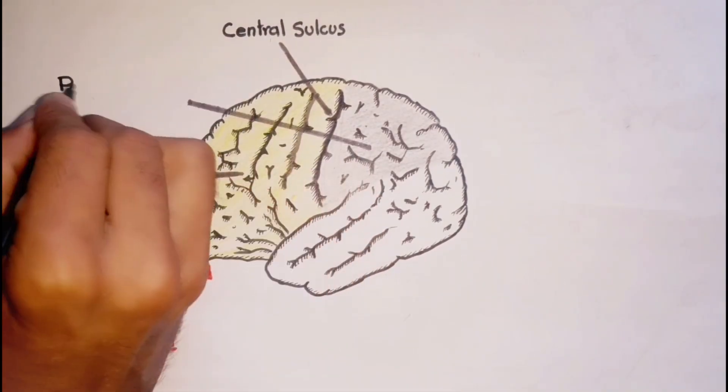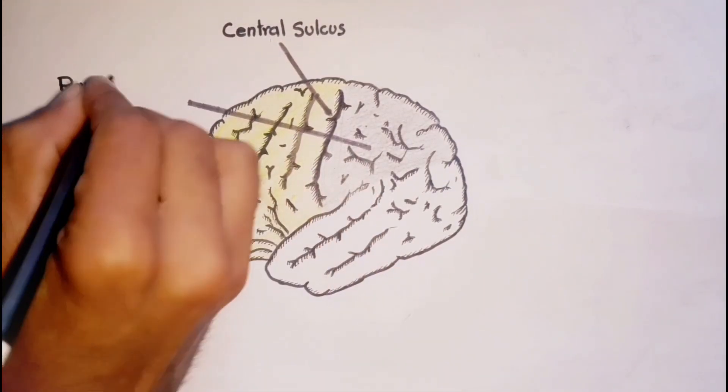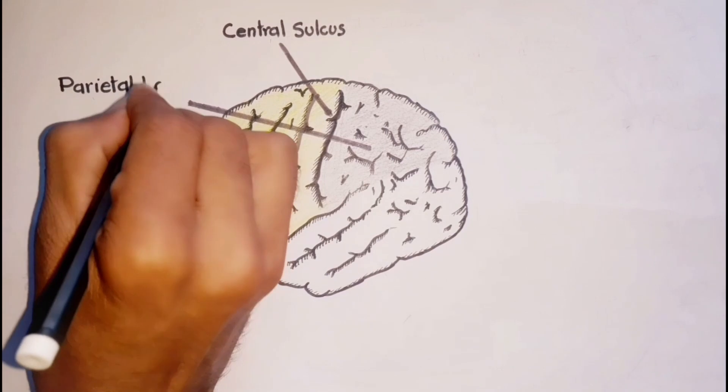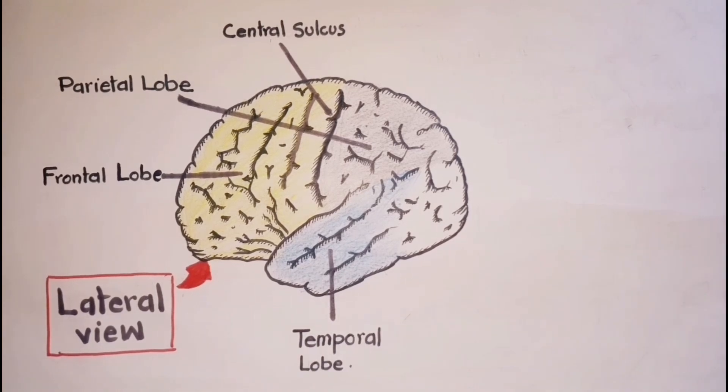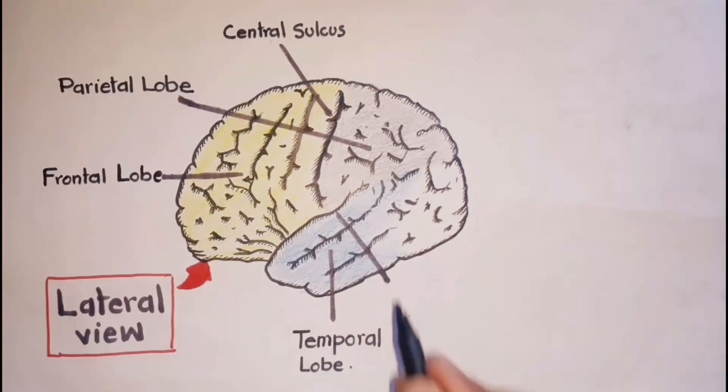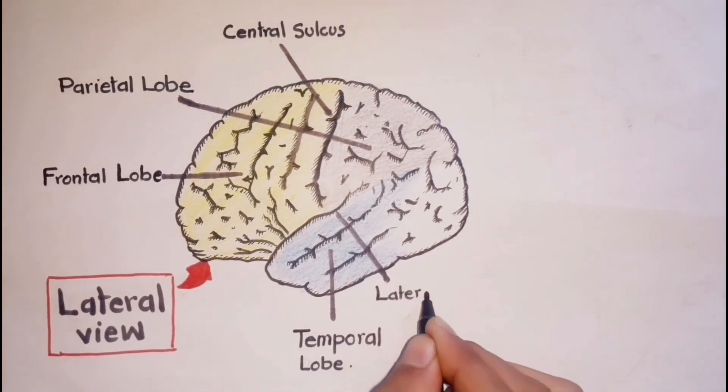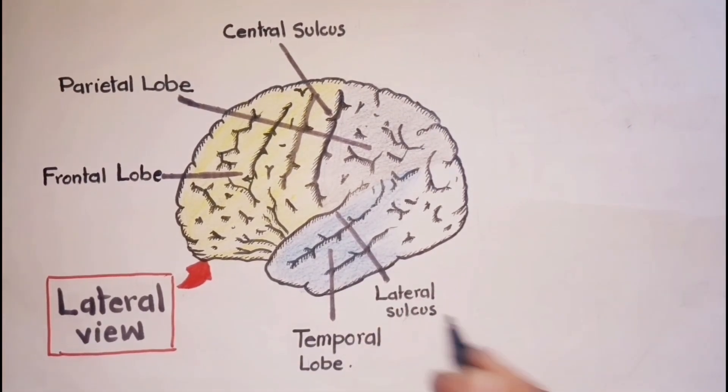This is the parietal lobe, posterior to the frontal lobe and separated from it by the central sulcus. The temporal lobe lies below the frontal and parietal lobes and is separated from them by the lateral sulcus.